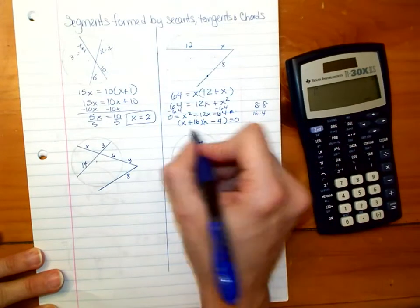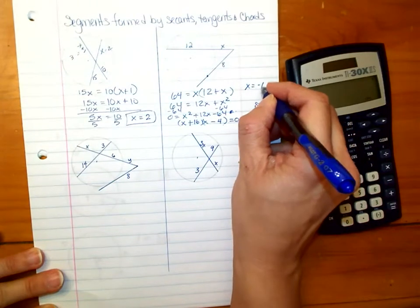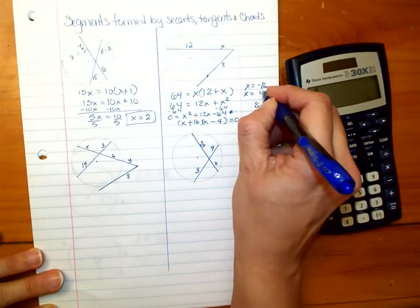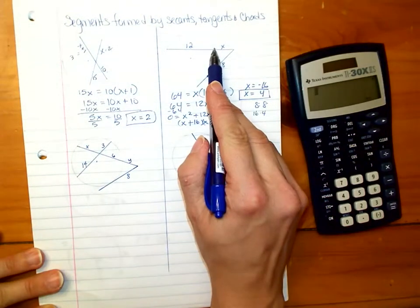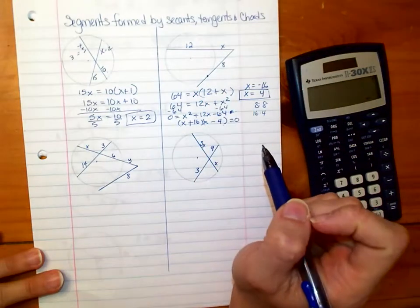We still have our equal 0. If we set each of those equal to 0, we get X equals negative 16, or X equals 4. And we keep the positive value, not the negative value, because we would never say that the length of something is negative 16.